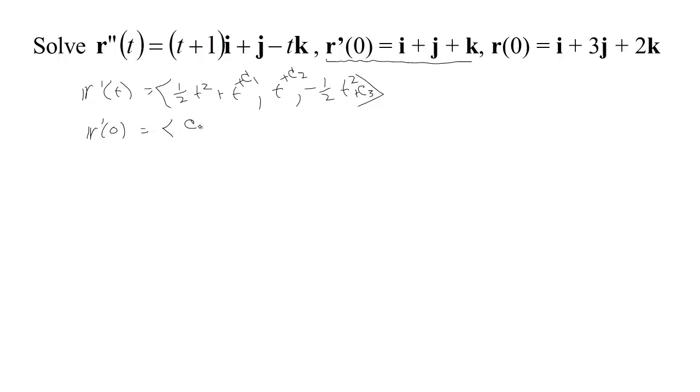Just plugging in 0 for t here, everything disappeared except for the constants. Comparing that to what we have, which is i, j, k, the vector 1, 1, 1, we can read off that c1 is 1, c2 is 1, and c3 is 1.